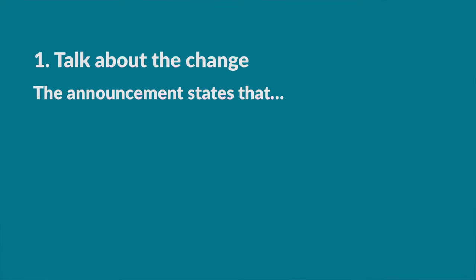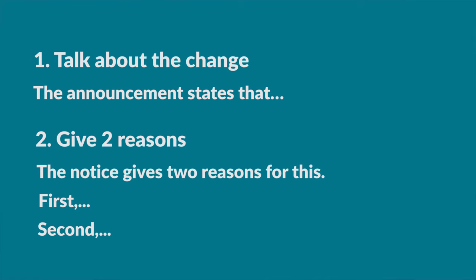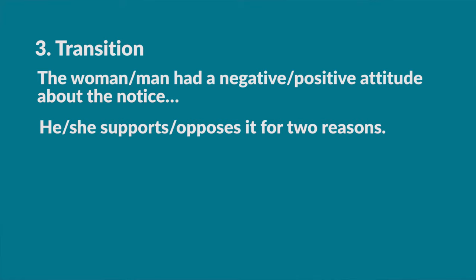First, make a statement about the change the announcement describes. You can say 'the announcement states that...' or 'according to the announcement...' After that, state the two reasons the announcement provides for this change — for example: 'the notice gives two reasons for this.' Start your first reason with 'first' and your second with 'second' to keep your answer well structured. Then make a transition to the student's opinion, and it's very important to use the past tense here because you're reporting something you heard before.